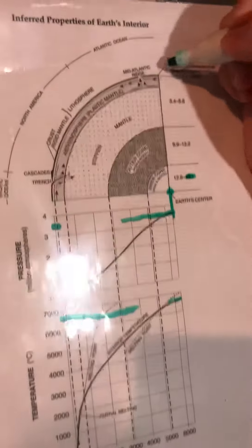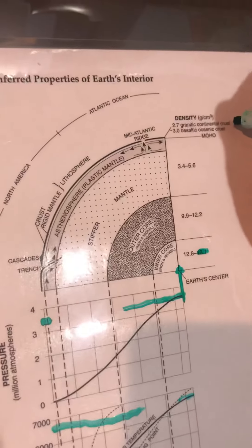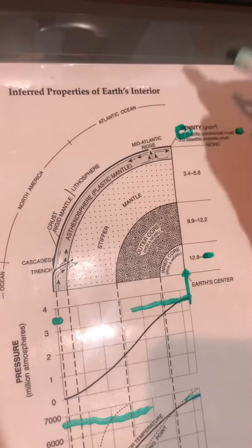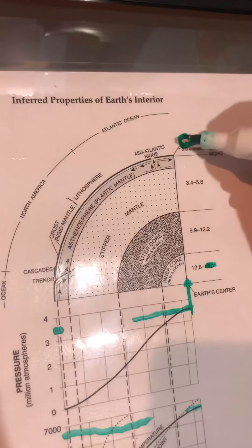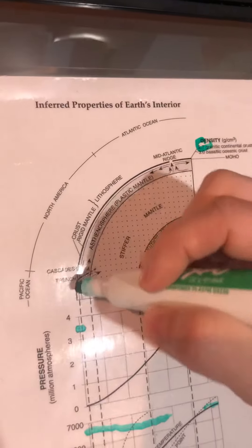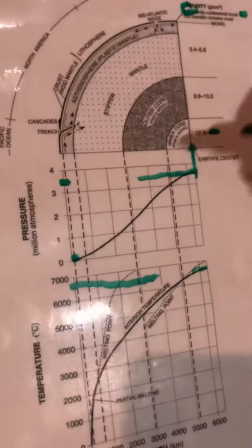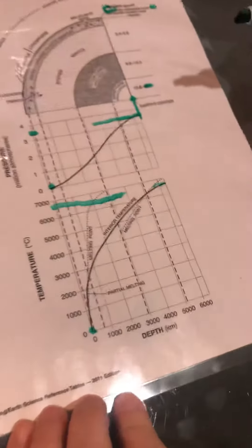Now if we go to where we live — we live on the continental crust, on land — our density is only 2.7. If you go down, you can see our pressure is pretty much zero, which is great because we need to be able to walk around. And if you look at our temperature, yeah, we're pretty low on that too.